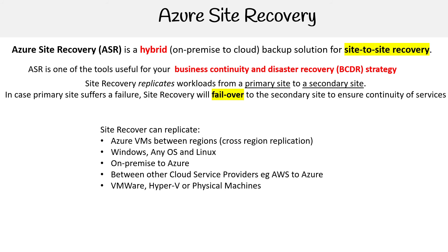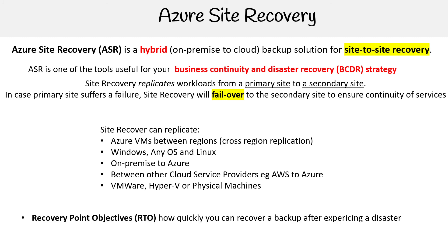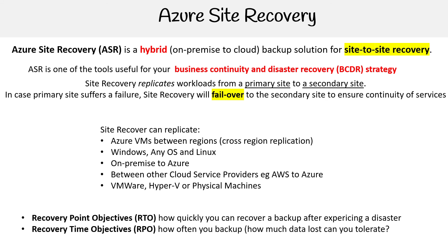I want to introduce you to two terms you really do need to know. The first is Recovery Time Objectives, or RTOs — this means how quickly you can recover from a backup after experiencing a disaster. The second is Recovery Point Objectives, or RPOs — how often you back up, meaning how much data loss can you tolerate. Those two terms are what you usually need to define when creating a backup strategy.